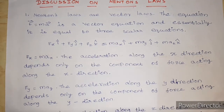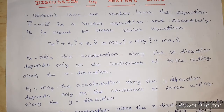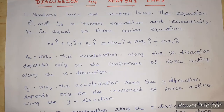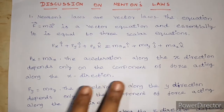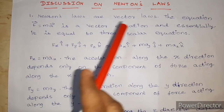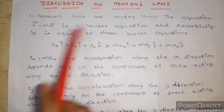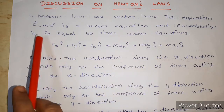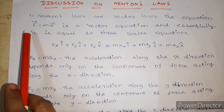Friends, we will discuss unit 3, laws of motion on Newton's law. We will know the vector form of Newton's second law. F vector equal to mA vector.